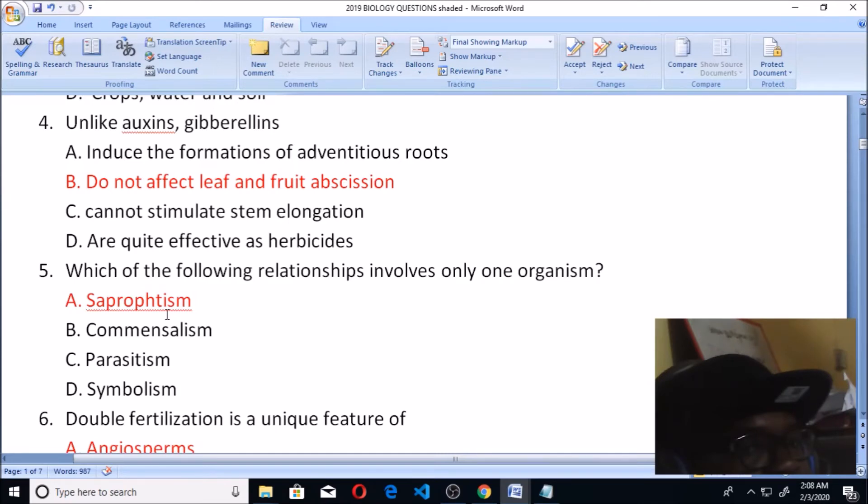But when you talk about saprophytes, saprophytes are those animals that feed on dead decaying organisms. So it actually involves one living organism and the other one is dead, decaying. So you can actually say that this one involves only one organism. So saprophytism is that relationship that involves only one organism, because that one organism is actually feeding on the decomposing part of another organism or dead materials. So one organism feeding on dead materials is known as saprophytism.